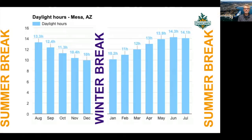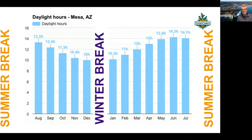It's not just the temperature — it's also daylight that decreases in the winter months. And vegetable crops need at least six hours of direct sunlight to grow productively. We can see as the winter comes, daylight hours decrease.